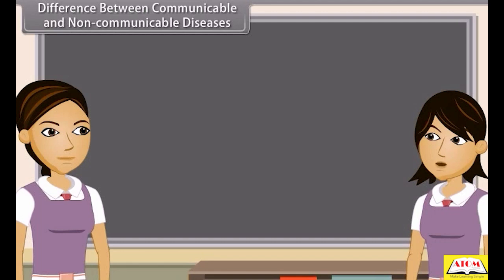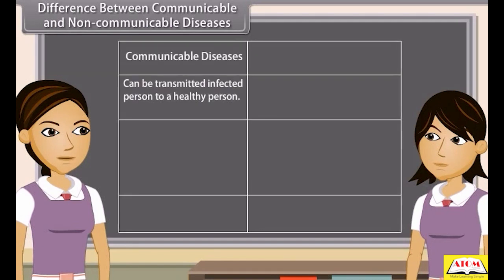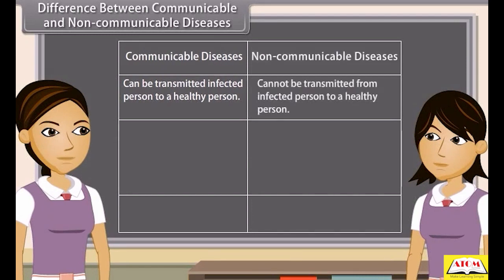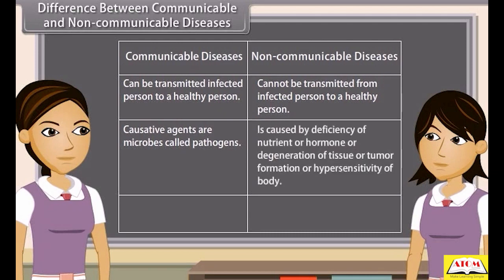Communicable diseases can be transmitted from an infected person to a healthy person, while non-communicable diseases cannot be transmitted. Communicable diseases are caused by microbes called pathogens. Non-communicable diseases are caused by deficiency of a nutrient or hormone, degeneration of tissue, tumour formation, or hypersensitivity of the body.